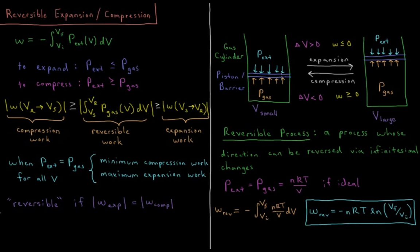So the amount of work we do when we expand from VI to VF, or VS to VL, as I have here, is the same as the negative amount of work we do during the reverse process. So this is called reversible work, because this is the work that you do where it's the same, whether you're expanding or compressing. You can reverse the direction of the work, and your system doesn't have any less energy in it.